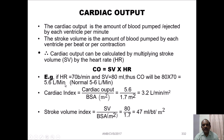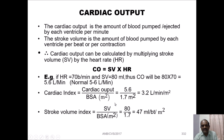Let us assume that the heart rate is 70 beats per minute and stroke volume is 80 ml. Thus, cardiac output will be 80 multiplied by 70, which comes to 5.6 liters per minute. The normal range is between 5 to 6 liters per minute. We can also determine the cardiac index as cardiac output divided by body surface area — in this case, 5.6 divided by 1.7 square meters, which comes as 3.2 liters per minute per square meter.